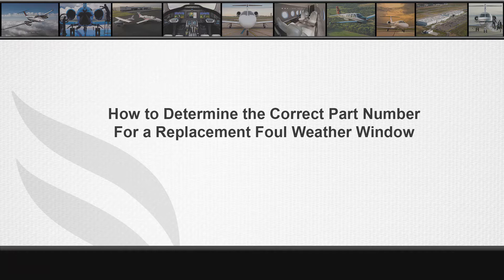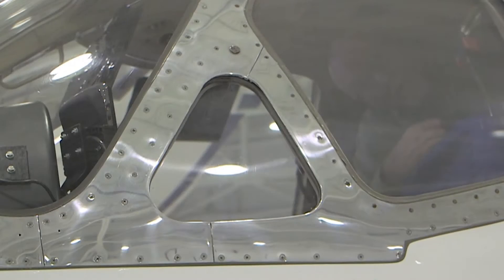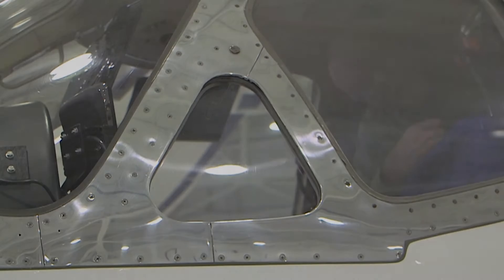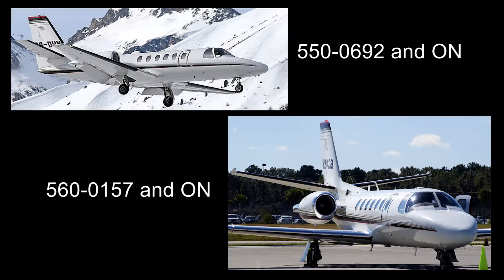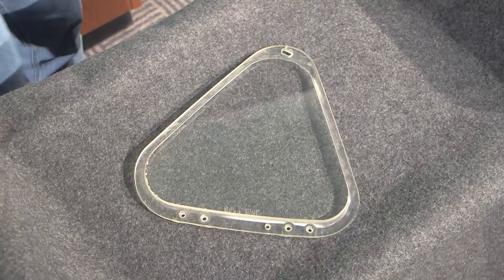This video will show the maintenance manual procedure for determining the correct part number spare replacement foul weather window used on the Model 550, serial numbers 692 and on, and the Model 560, serial numbers 157 and on. There are three different foul weather window part numbers available for these specific serial number groups of aircraft.